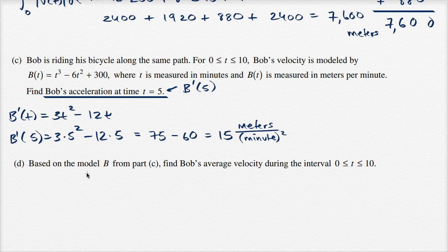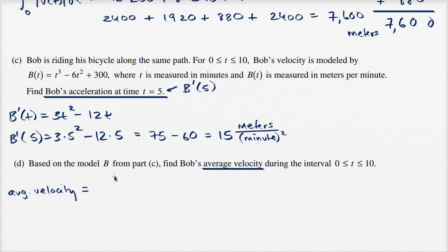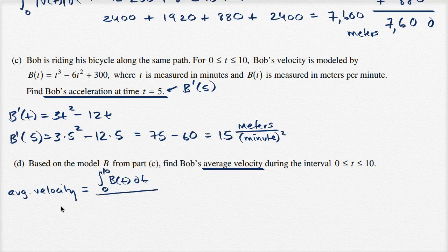All right, let's do the next part. Based on the model b from part c, find Bob's average velocity during the interval 0 ≤ t ≤ 10. The average velocity is going to be the area under the velocity curve divided by our change in time. So it's the integral from t = 0 to t = 10 of b(t) dt, divided by 10 minus 0, which equals 10.